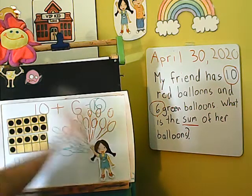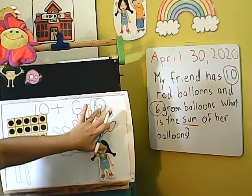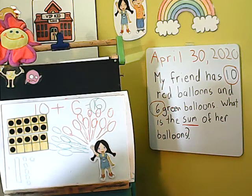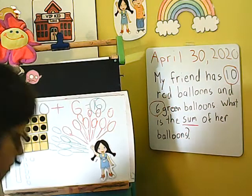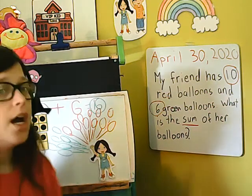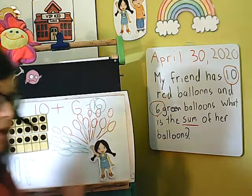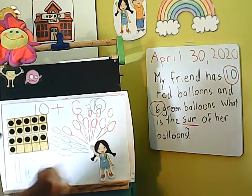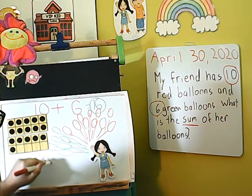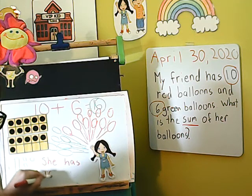So no matter what way I try to solve this problem, I should come up with sixteen as my answer. I can now write my sentence — this is new, we haven't done this a lot. She has sixteen balloons.